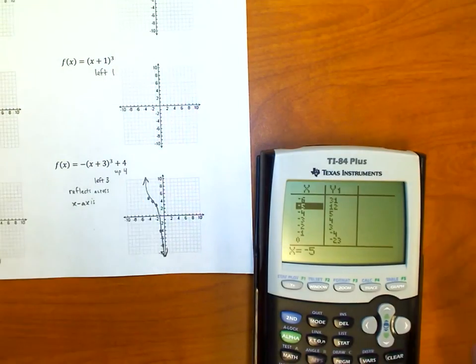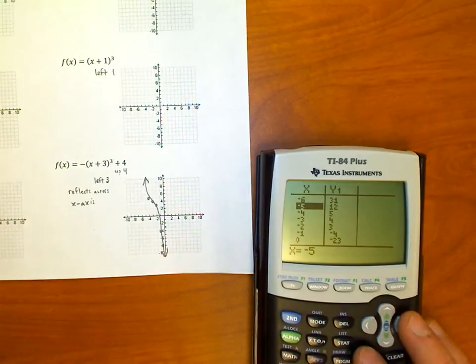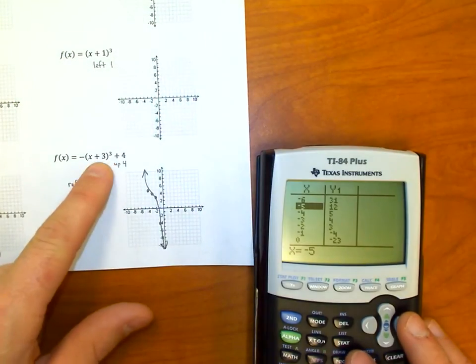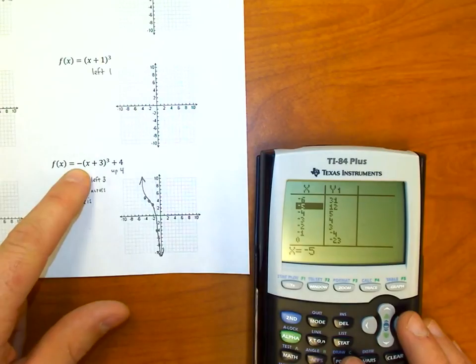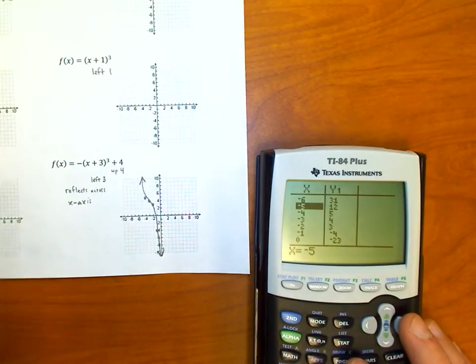There's all the points that I have graphed. You don't need to memorize how to do this all by hand, but you do need to be able to recognize that that moves it left three, and this moves it up four, and that flips it upside down—it reflects it across the x-axis.